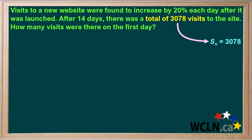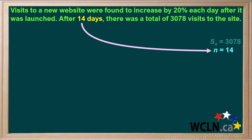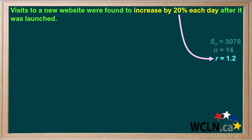The 3078 total visits to the site we'll call the sum Sn. Because the sum was determined after 14 days, the number of terms n is equal to 14. An increase of 20% each day would mean that the visits on a particular day would be 120% of the visits of the previous day. 120% is the same as 1.2, so the common ratio r is equal to 1.2.